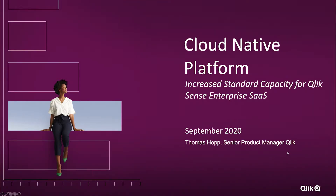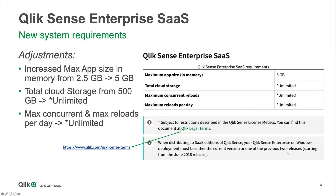So what this actually means is today there's a limit for the maximum app size and memory — that's 2.5 gigabyte. And that's what we're going to double, making it the 5 gigabyte limit. So all the apps for all Qlik Sense Enterprise tenants, as long as they're using the standard capacity, they can be up to 5 gigabyte in memory. That's the initial footprint.